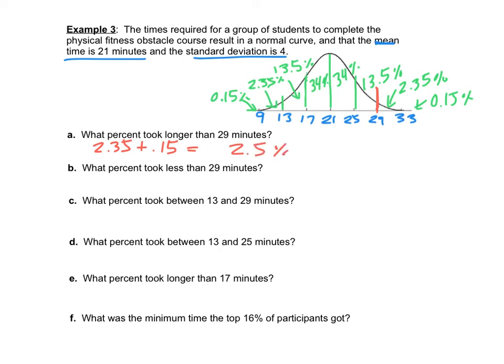What percent took less than 29 minutes? Since 2.5% took more than 29 minutes and everything adds to 100%, we just do 100 minus 2.5, which gives us 97.5%. This shortcut saves you from adding all the individual sections.